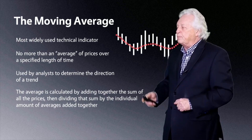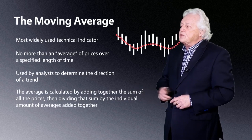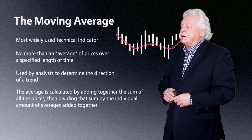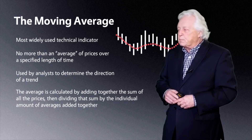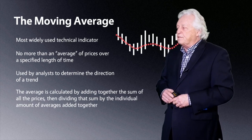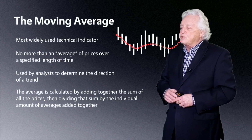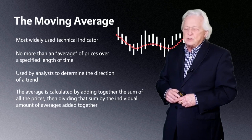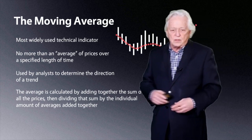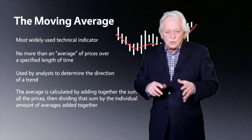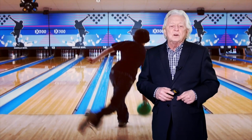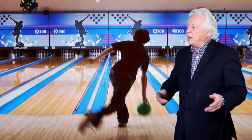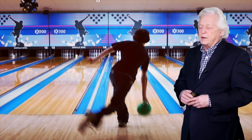There are many ways to use it. The average is typically calculated by adding together the sum of all the prices, then dividing that sum by the individual amount of prices added together. For the purpose of what we're doing here, let's say it's of closing prices.